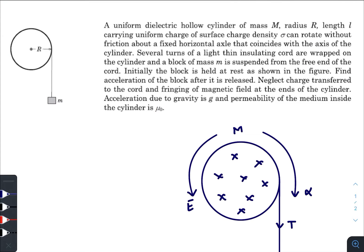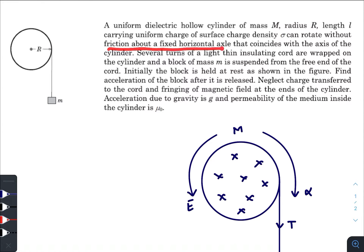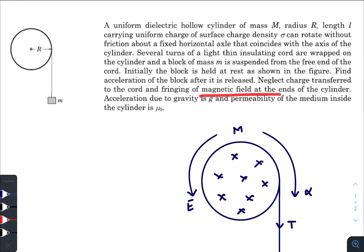Hey, what is up everyone — I hope all of you are doing great. In today's question we have a uniform dielectric hollow cylinder of mass M, radius R, and length L, carrying a uniform surface charge density σ. It can rotate without friction about a fixed horizontal axle that coincides with the axis of the cylinder. Several turns of thin light insulating cord are wrapped on the cylinder, and a block of mass m is suspended from the free end of the cord. Initially the block is at rest. Find the acceleration of the block after it is released. Fringing effects are neglected, acceleration due to gravity is g, and permeability of the medium inside the cylinder is μ₀ (vacuum).